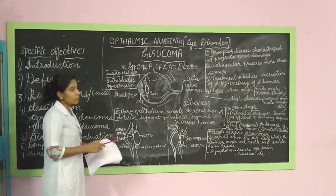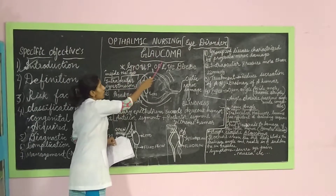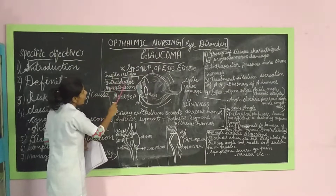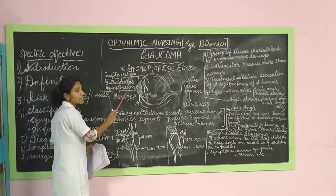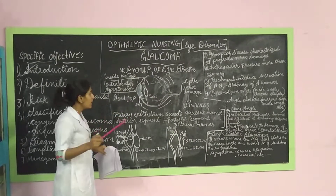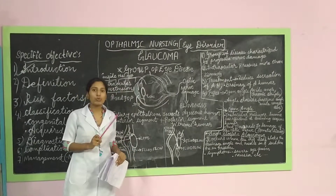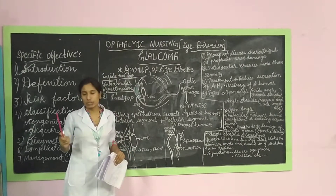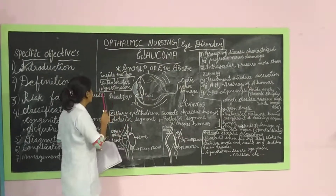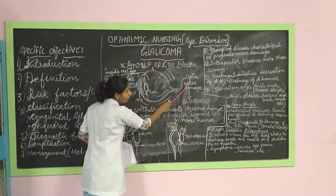We will see the introduction of Glaucoma. Glaucoma is a group of eye diseases characterized by intraocular hypertension, that means increased intraocular pressure more than 22 mmHg. Remember that the normal range of intraocular pressure is 12 to 22 mmHg — that means millimeter of mercury. Because of increased intraocular pressure, it leads to optic nerve damage.